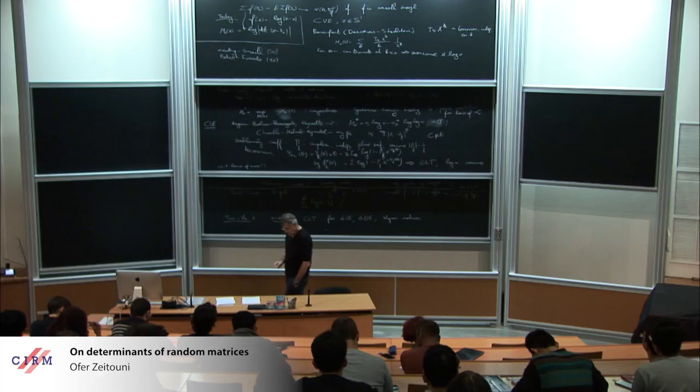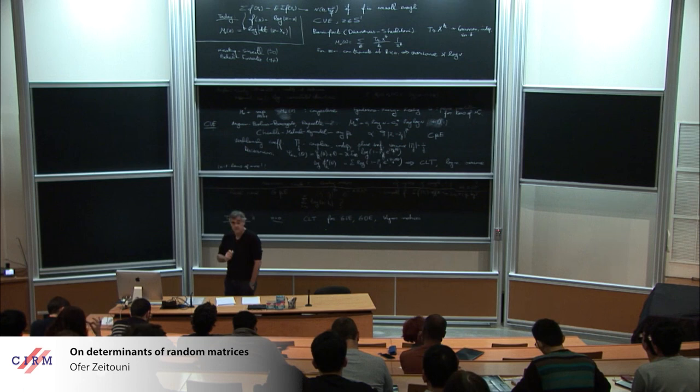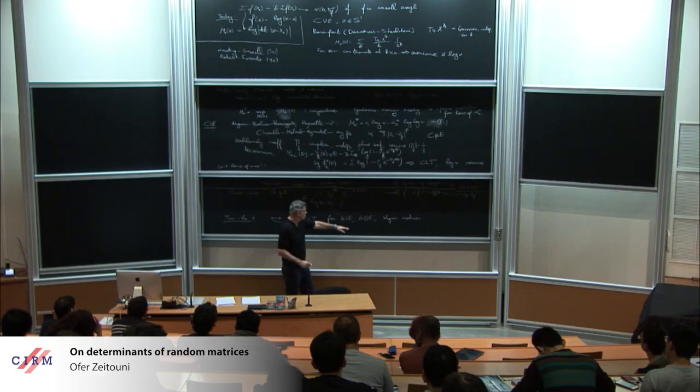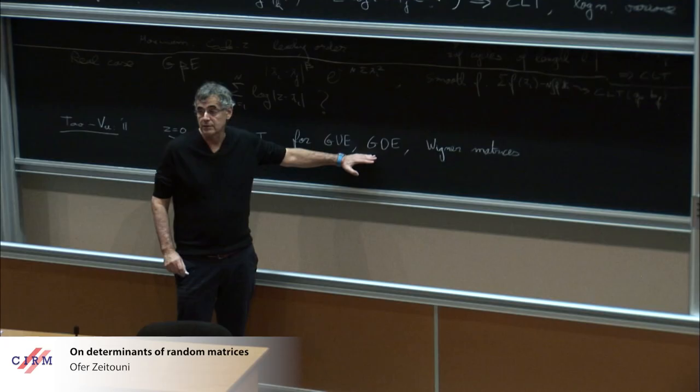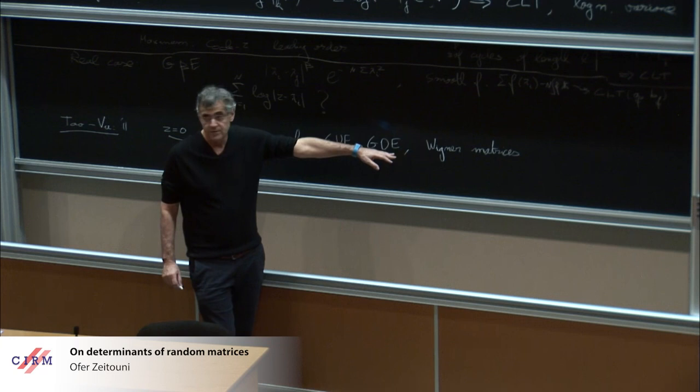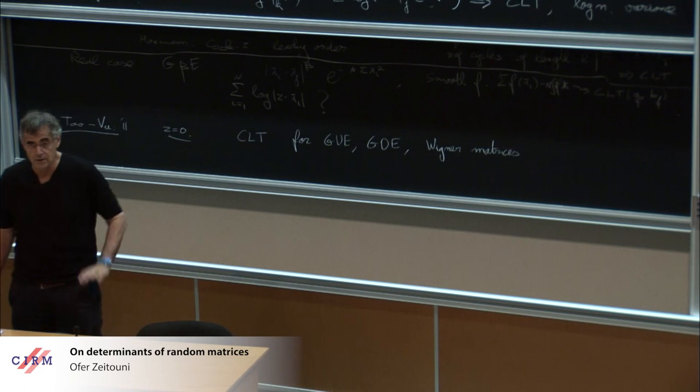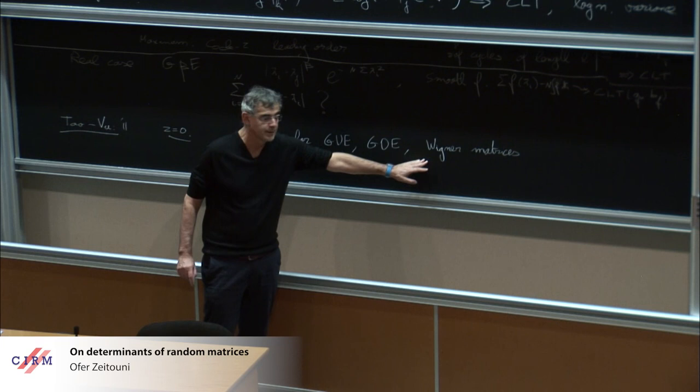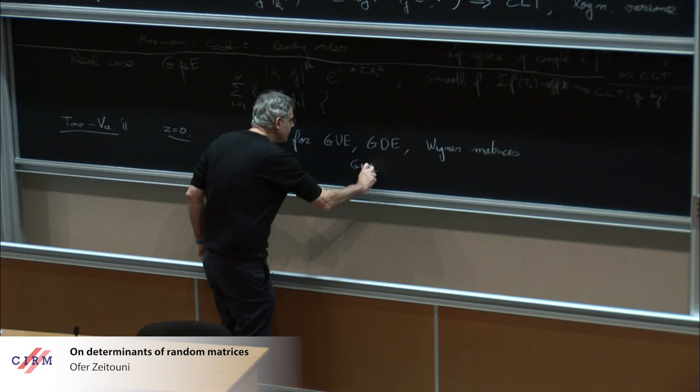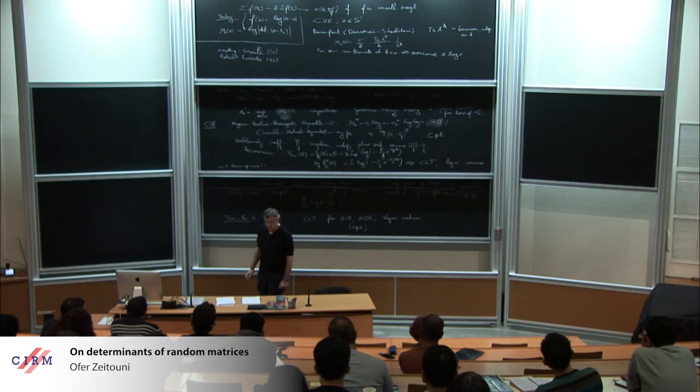By Wigner matrices, I mean matrices with independent entries except for the symmetry constraint. In the proof, the key step is to prove it for GUE and GOE. The move to Wigner matrices is done by a replacement principle that has been used in the study of spacing. For GUE, GOE, in fact the proof could work for G beta E for general beta.